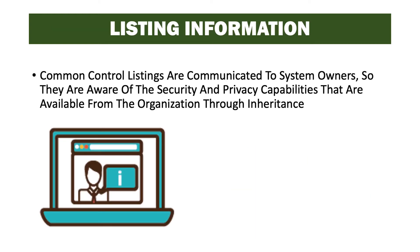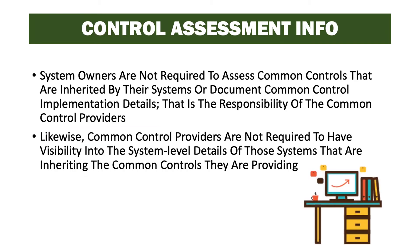Common control listings are communicated to system owners so they're aware of the security and privacy capabilities available from the organization through inheritance. System owners are not required to assess common controls that are inherited by their systems or document the common control implementation details — that's the responsibility of the common control provider. The system owner would list on their system control traceability matrix, or SCTM, that the control is being inherited and who it's being inherited from.